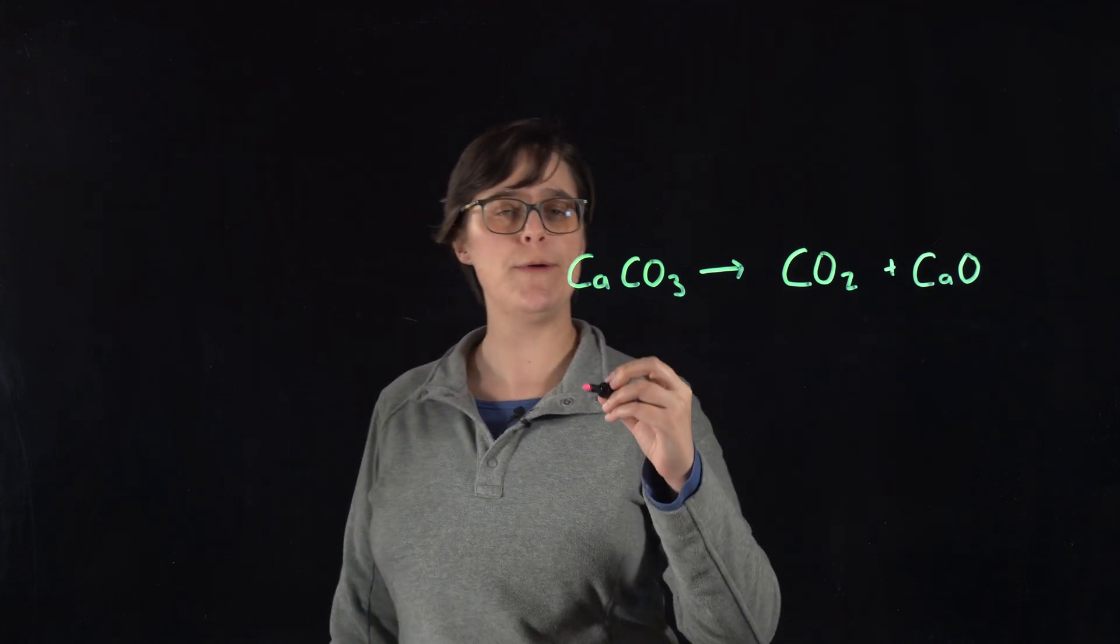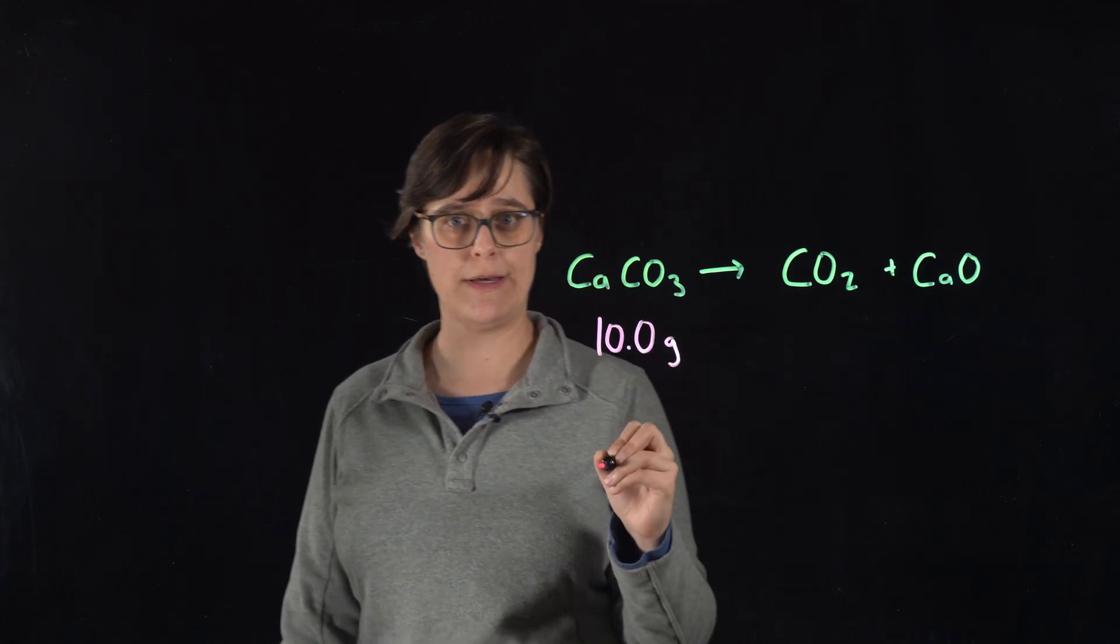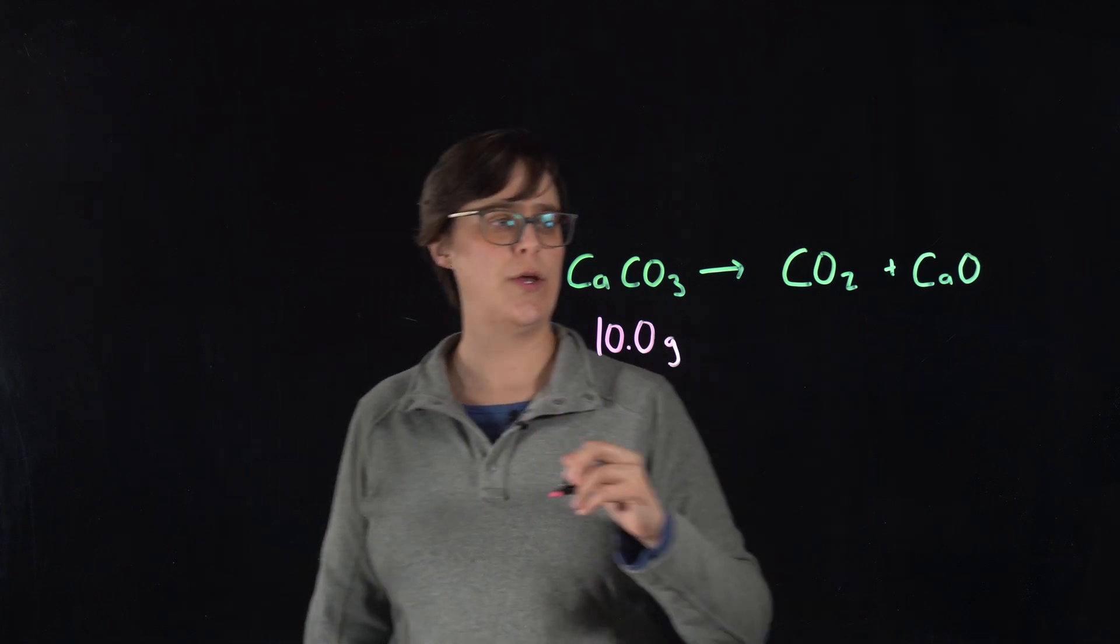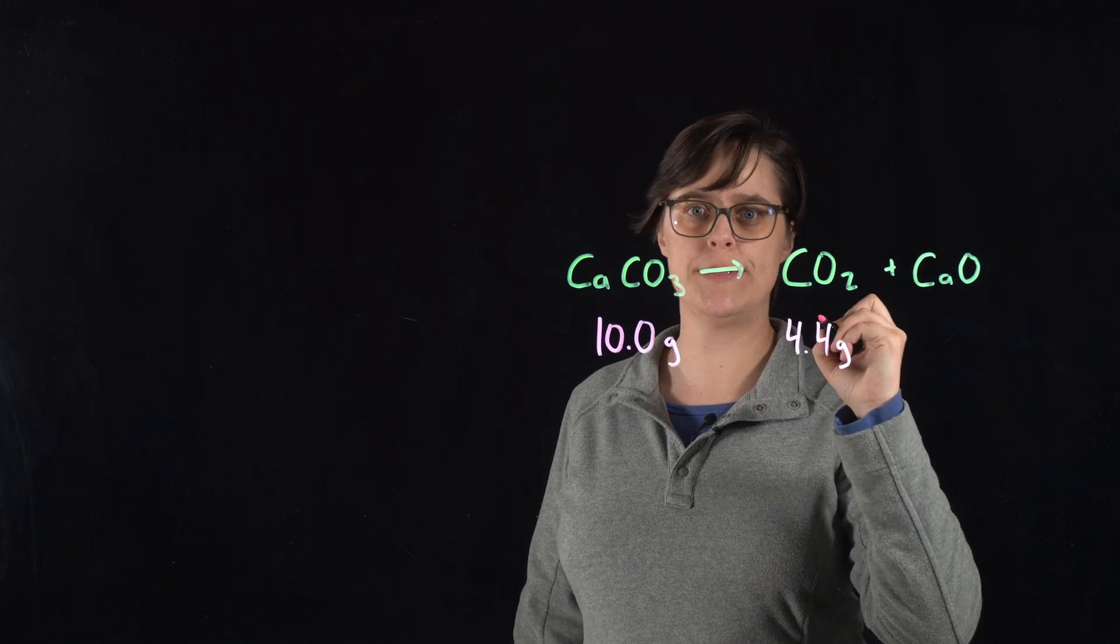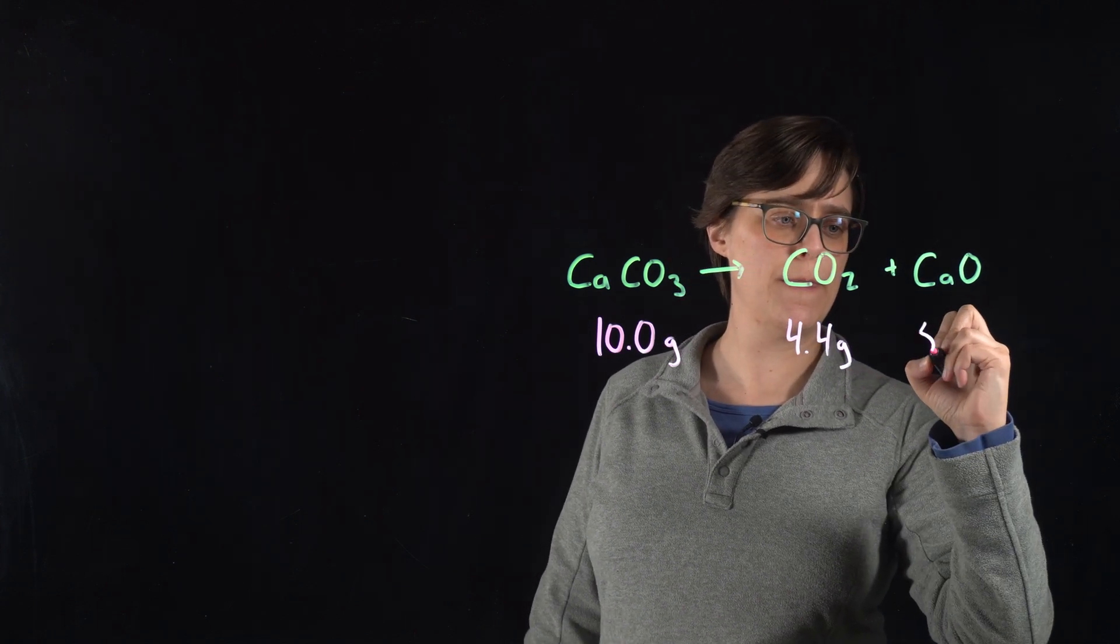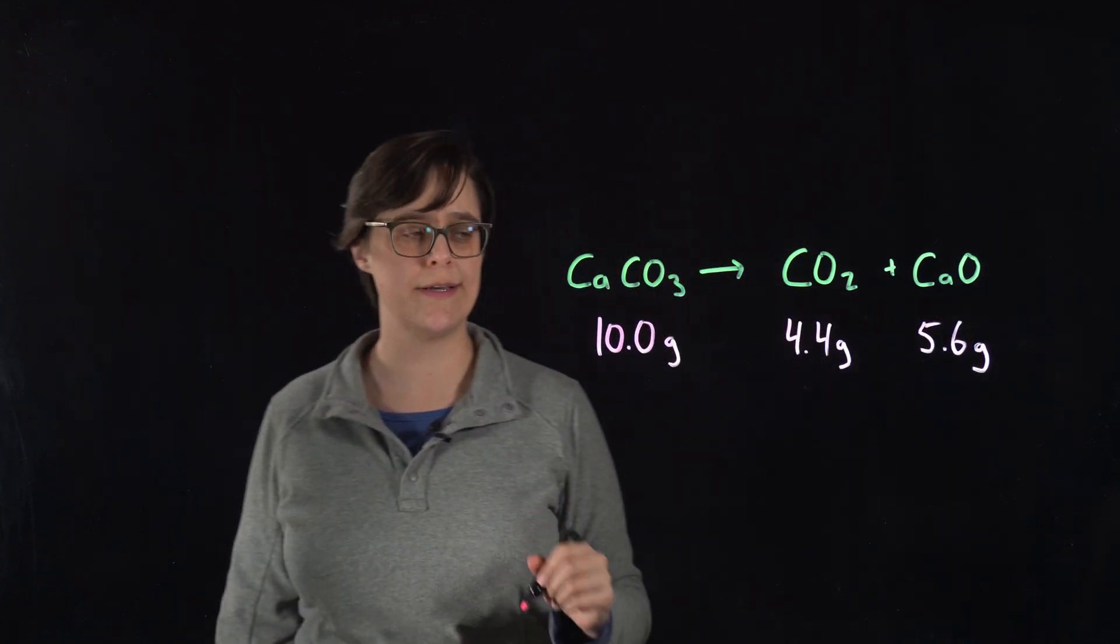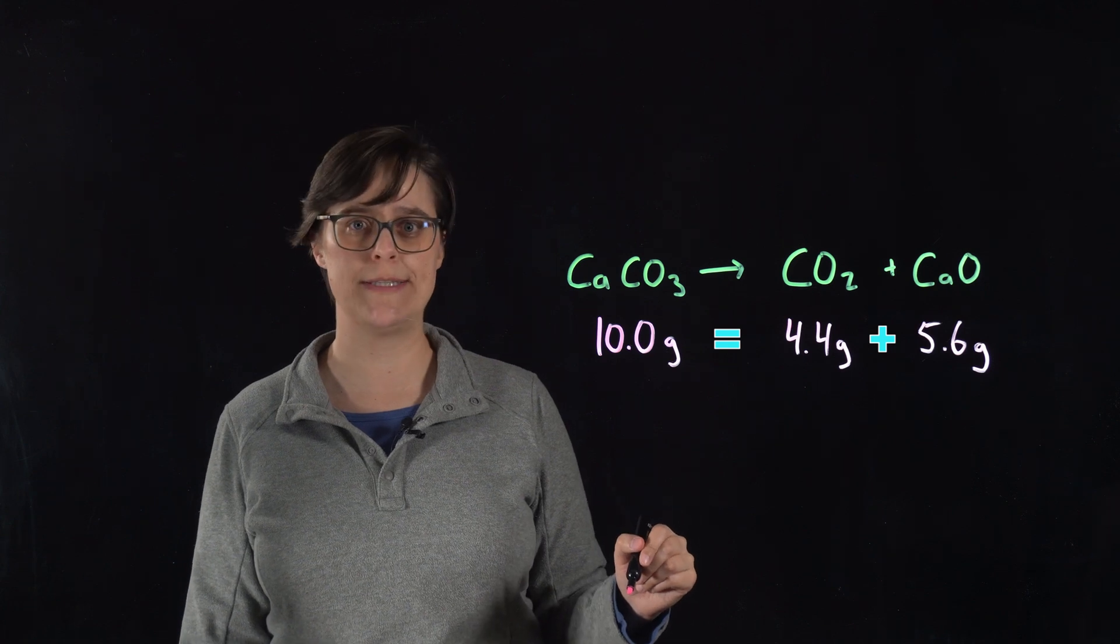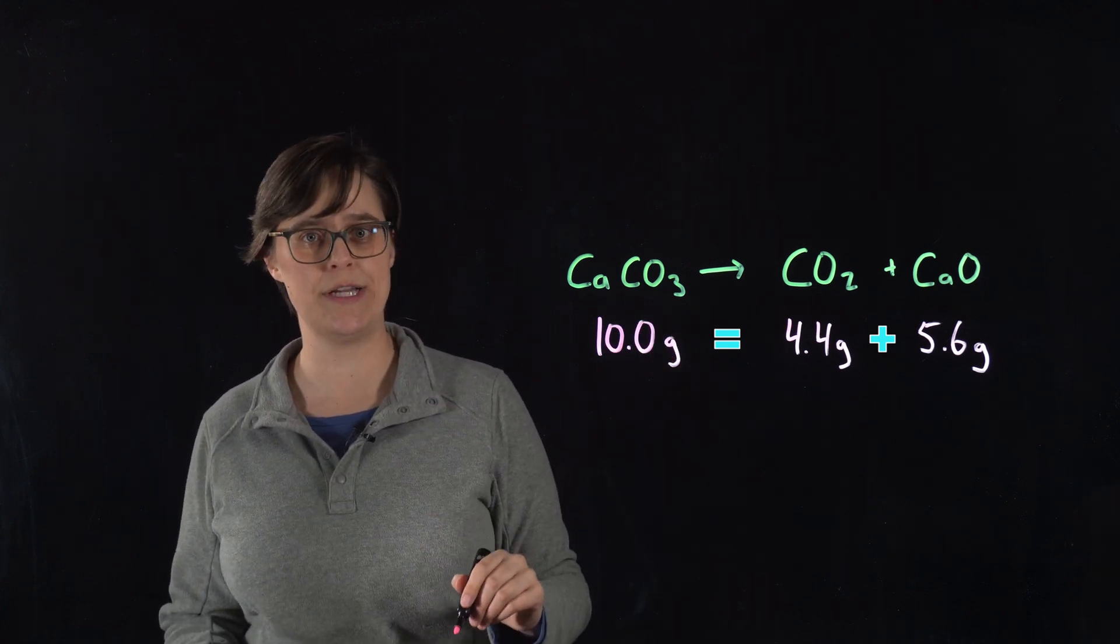If we start with 10.0 grams of calcium carbonate and it fully decomposes, we end up with 4.4 grams of carbon dioxide and 5.6 grams of calcium oxide. 4.4 grams plus 5.6 grams equals 10.0 grams. The mass did not change.